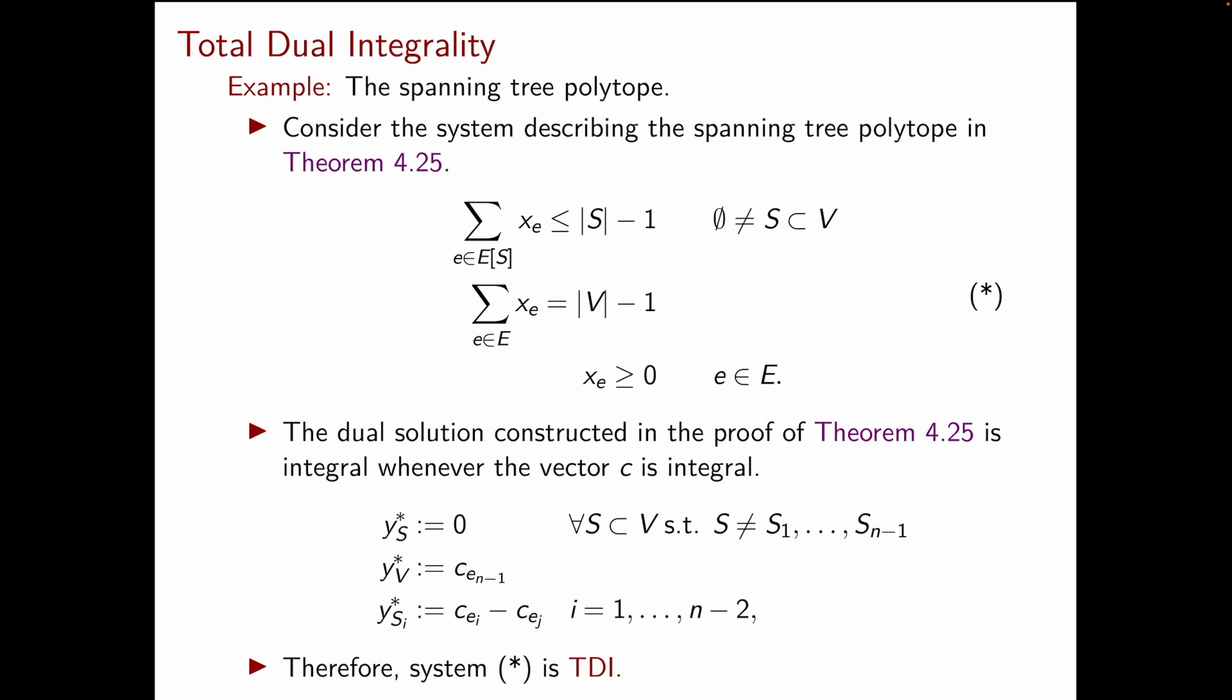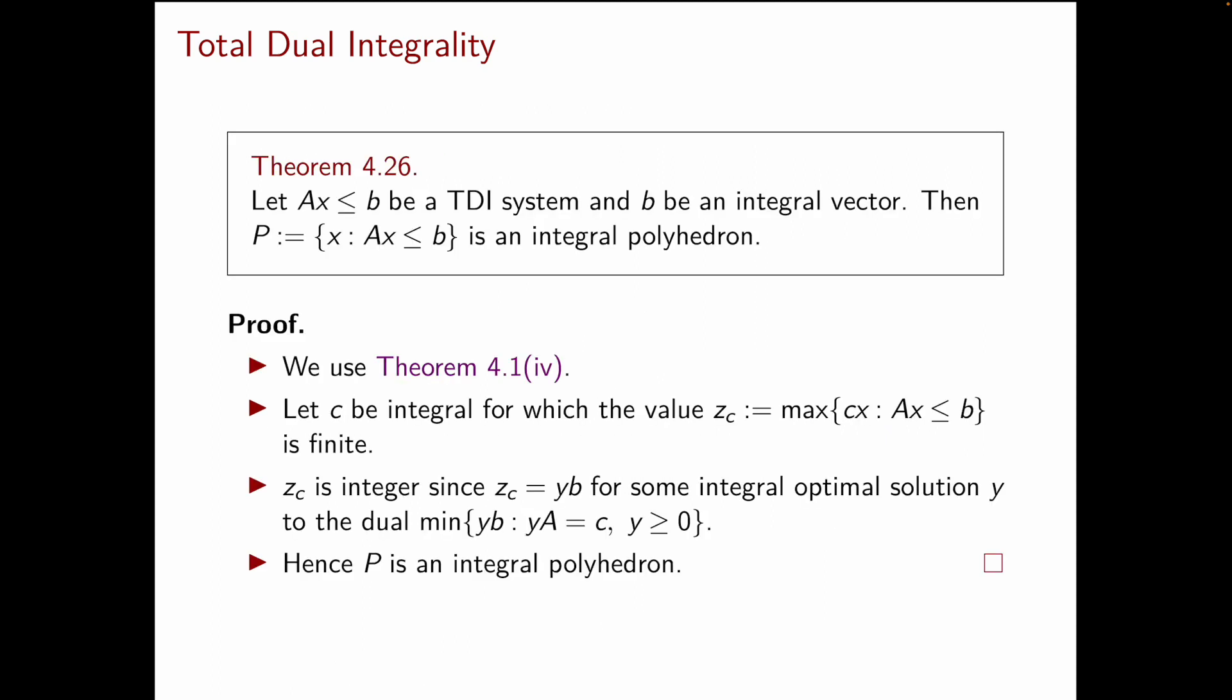However, in theorem 4.25, we didn't care about TDI-ness. We only wanted to show the integrality of the polyhedron described by star. So, what is now the link between TDI-ness and integrality of a polyhedron? This is the link given by theorem 4.26.